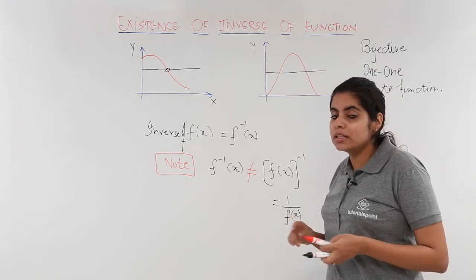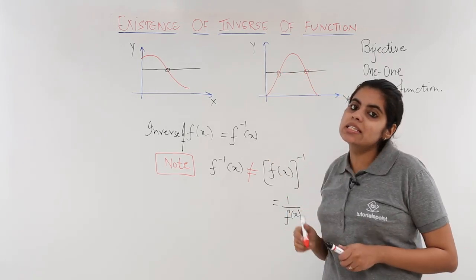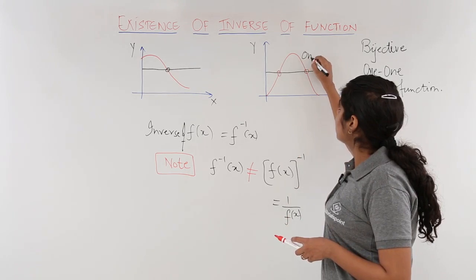Now, how many points intersection of the line with the graph? Two points. And since the line intersects the graph at more than one point, this is not one-one.